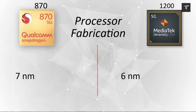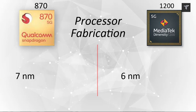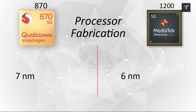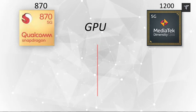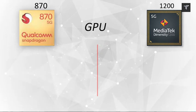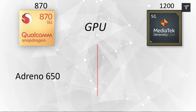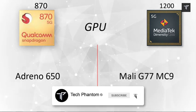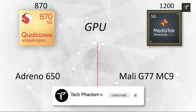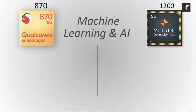On process fabrication — the physical size of the processor — the Snapdragon 870 is a 7nm processor whereas the MediaTek Dimensity 1200 is a 6nm processor, which means the MediaTek will be more power efficient in terms of usage. On the GPU side for gaming and intense usage, the Snapdragon has the Adreno 650 whereas the MediaTek has the Mali-G77 MC9 GPU.